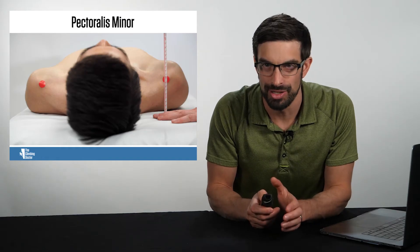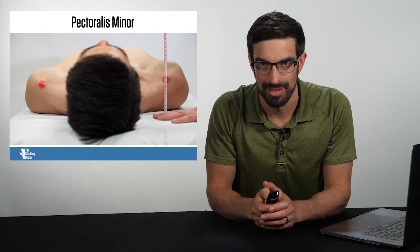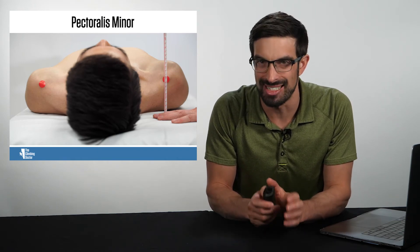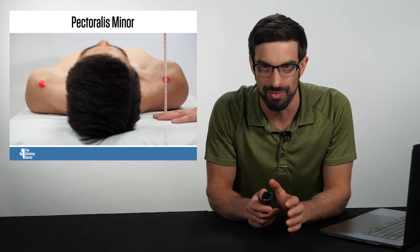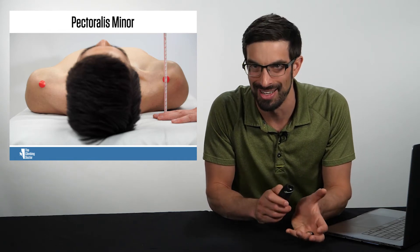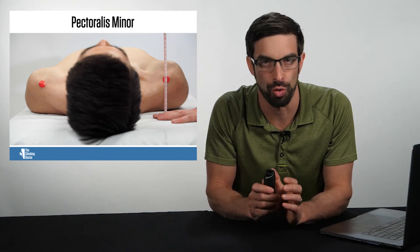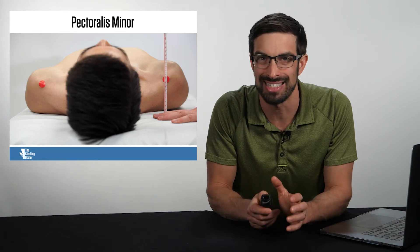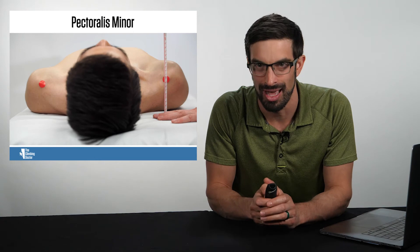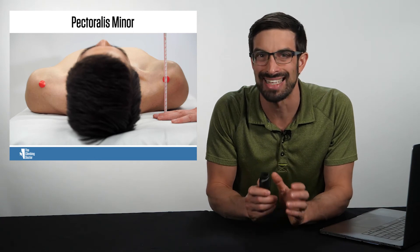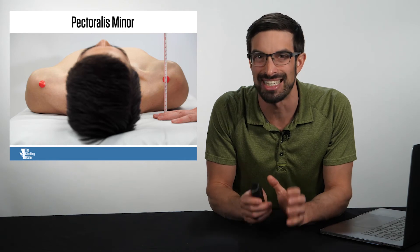When performing this technique, you can do so with the elbows extended or the elbows bent. If you perform it with the elbows extended, make sure that the scapula isn't anterior tipping from a short biceps short head or a short biceps long head. Since the biceps short head attaches to the coracoid process and the biceps long head attaches to the superior glenoid tubercle, a short muscle can cause anterior tipping of the scapula and give the perception of a stiff pec minor.